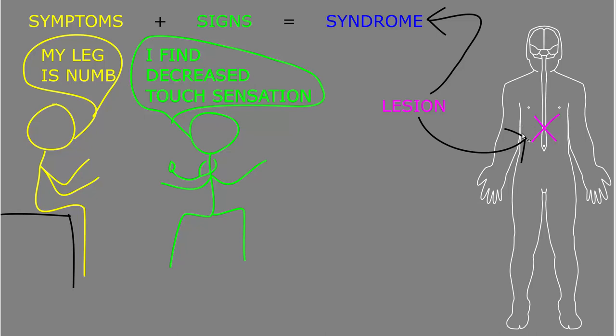Dysfunction of parts of the nervous system may cause different patterns of functional abnormalities called syndromes. Syndromes consist of symptoms and signs.